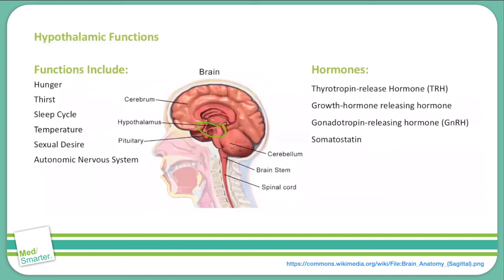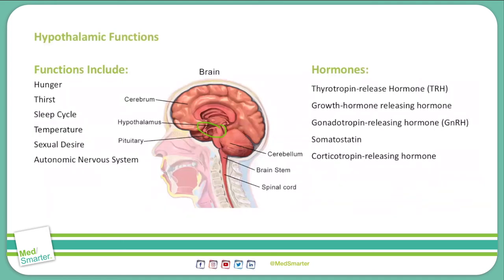The hypothalamus also synthesizes and releases corticotropin releasing hormone, or CRH. CRH acts on the pituitary to stimulate the release of adrenocorticotropic hormone, or ACTH. ACTH then acts on the adrenal glands to stimulate the production of glucocorticoids like cortisol. The hypothalamus is also responsible for synthesizing oxytocin.